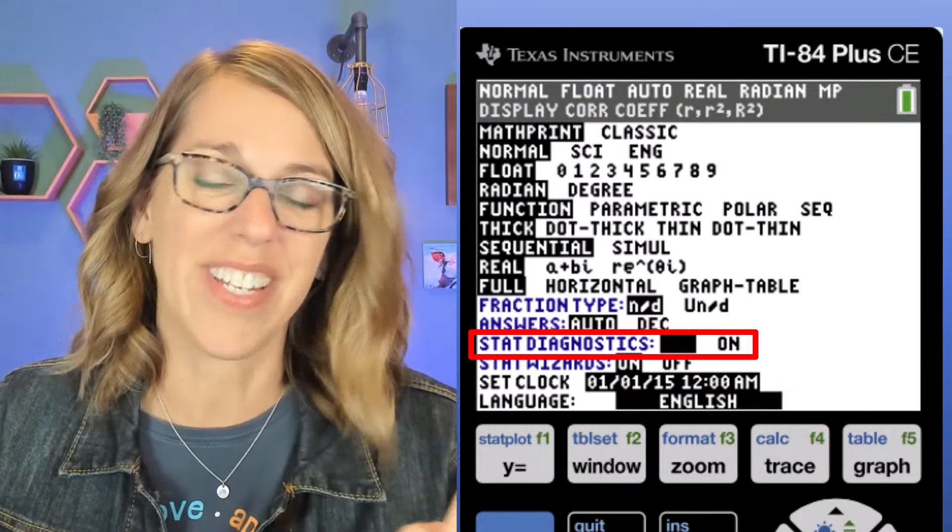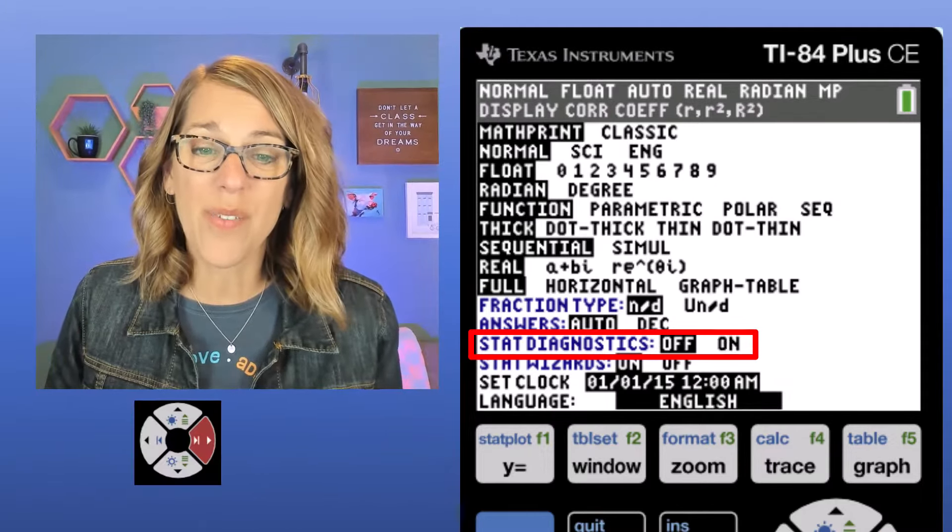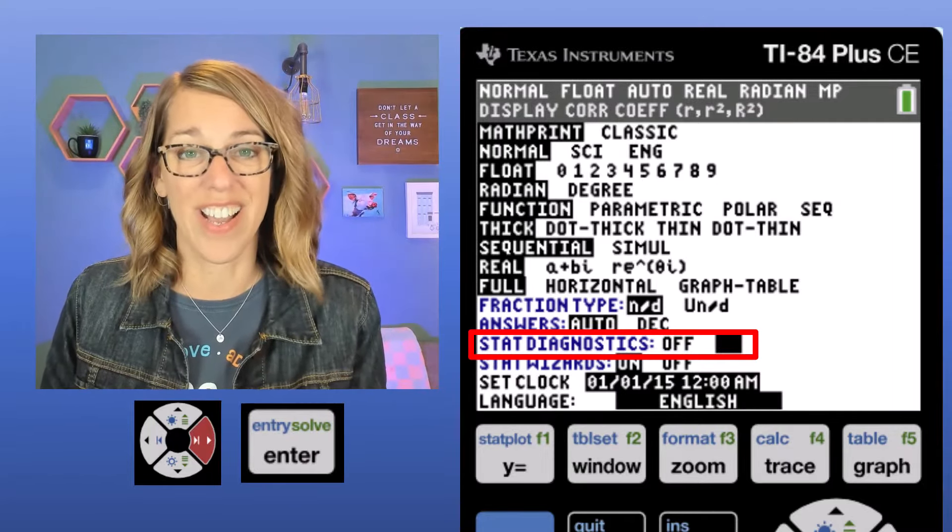Now mine does, so under stat diagnostics, I notice that it's turned off. I want to arrow over to on and then hit enter, so those diagnostics are on. Now the R will show up for us.